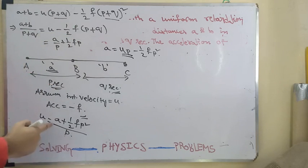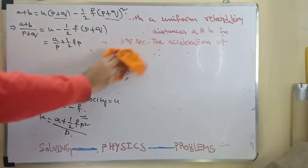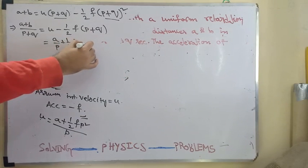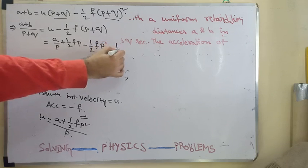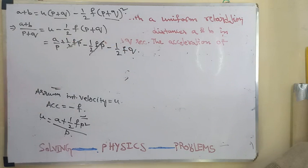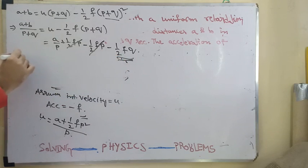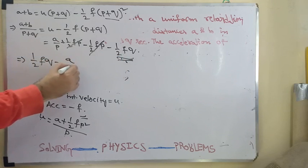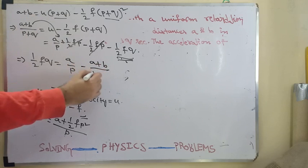U is equal to A plus half F P square by P. So we can write it as A by P plus half F P. I am dividing this with P. I get like this minus half F P minus half F Q. Half F P is gone on either side. We will transport the half F Q to this side. So I get half F Q is equal to A by P. We will transport this term to this side, A by P minus A plus B by P plus Q.